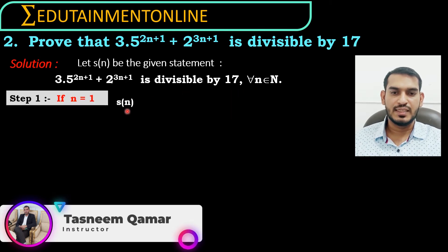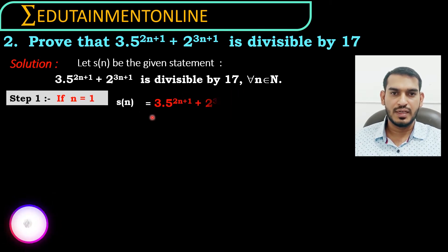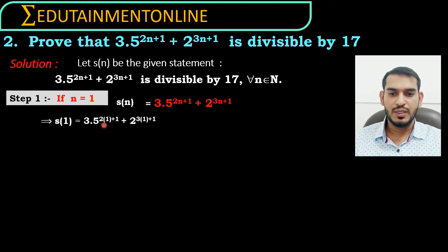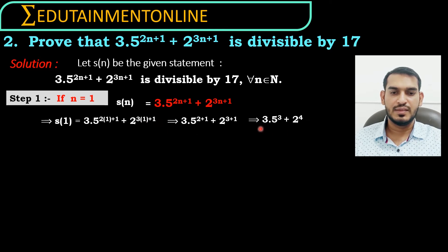First we have to prove that s of n is true for n equals 1. So in place of n we substitute 1. S of 1 is equals to 3 into 5 power 2 into 1 plus 1, plus 2 power 3 into 1 plus 1, which can be written as 3 into 5 power 3 plus 2 power 4.